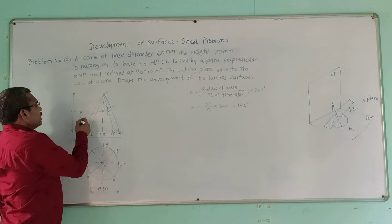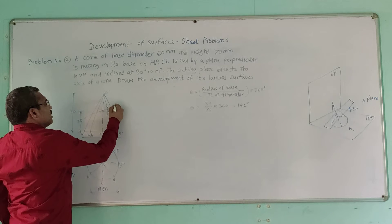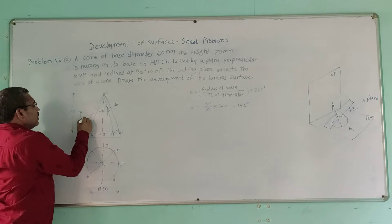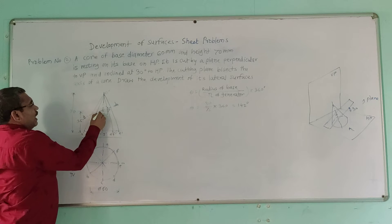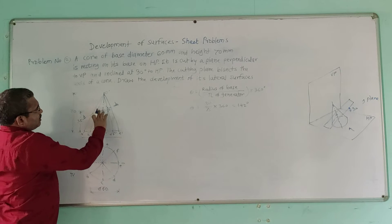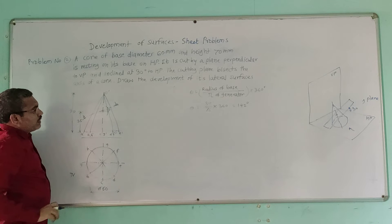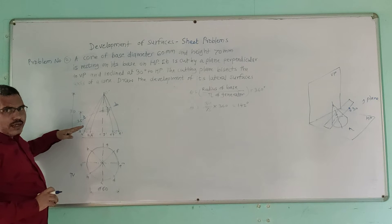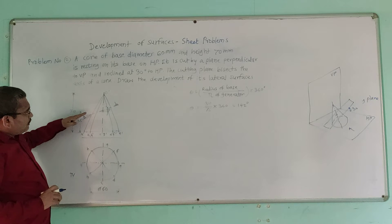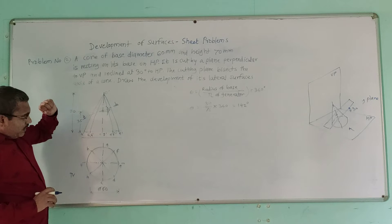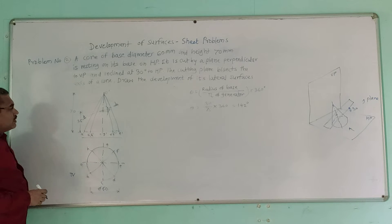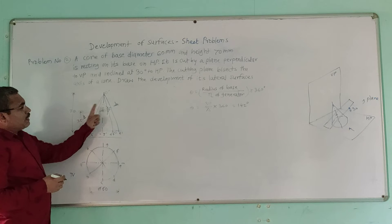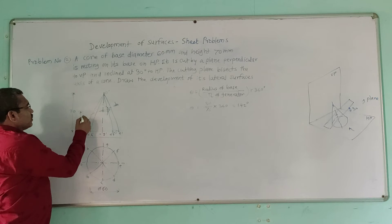Next, draw the section plane. This section plane is inclined at 30 degrees to HP and bisects the axis. Mark the point at 35 mm on the axis and draw the section plane at 30 degrees inclined to HP. The next task is to mark the intersection of this cutting plane with each of the generators.